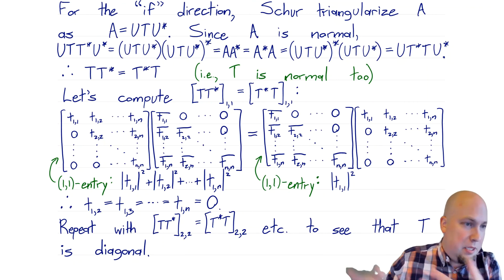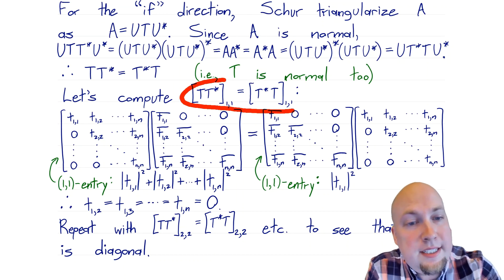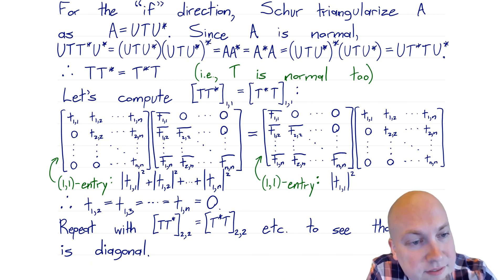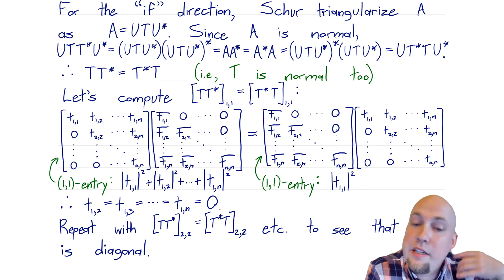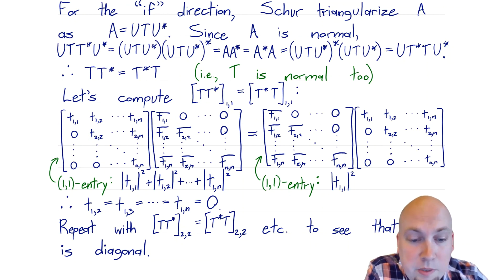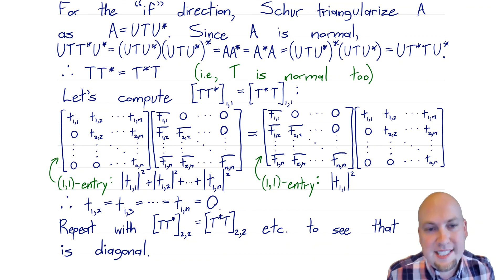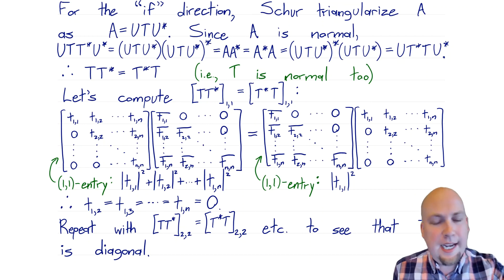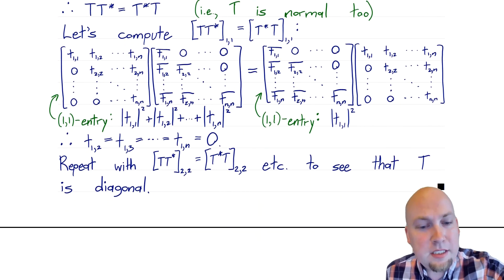Now, to get all the way to T being diagonal, we just look at other entries. We look at the (2,2) entry of T T* and T* T, and we find that t₂₂ is the only non-zero entry in the second row of T. Then we look at the (3,3) entry and find the same. Every entry we examine zeros out all of the non-diagonal entries in that row. So you just repeat the same argument over and over again, and eventually you find that T is diagonal, which completes the if direction and the full proof of the theorem.